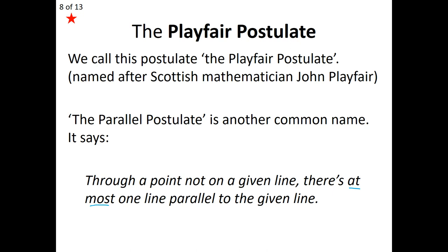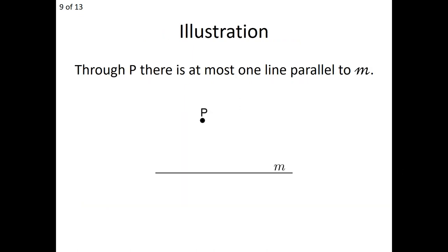If we look at a diagram of how the Playfair Postulate unfolds: given a point P not on line M, we're allowed at most one line through point P that's parallel to line M. In this case, the given diagram is satisfied. We can have zero parallel lines through point P parallel to line M, but we are allowed at most one — so I can choose to create a line N that passes through point P and is parallel to line M. That's how powerfully Playfair wrote it, which is why we give him credit for this postulate.